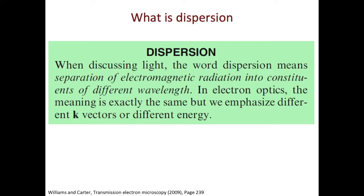I took it straight from the Williams and Carter book. When talking about light, the word dispersion means separation of electromagnetic radiation into constituents of different wavelengths. In electron optics, dispersion has a very similar meaning, but it emphasizes the different k-vectors or different energy.